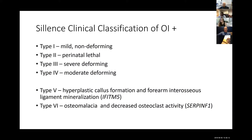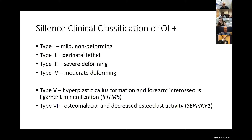For osteogenesis imperfecta, there is a phenotypic classification system developed by David Sillence. It is a numbering system where type 1 is the mildest type. They typically have fairly normal stature and while they do fracture easily, their bones typically heal normally. Type 2 osteogenesis imperfecta is the perinatal lethal form with severe in utero fractures. Type 3 is the most severe surviving form, called severe deforming, and individuals typically also have dentinogenesis imperfecta. Type 4 is an intermediate phenotype between type 3 and type 1, called moderately deforming osteogenesis imperfecta.